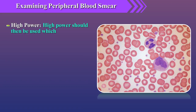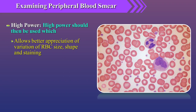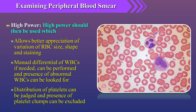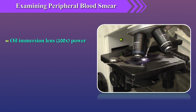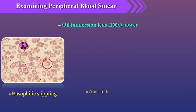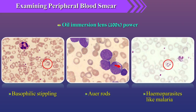Having selected the subtail region of the film where RBCs are just overlapping, high power should then be used, which allows better appreciation of variation in RBC size, shape, and staining. A manual differential of WBCs if needed can be performed, and presence of abnormal WBCs can be looked for. Distribution of platelets can be judged and presence of platelet clumps excluded. The oil immersion lens or 100x power should be used only for final examination of unusual cells and fine details such as basophilic stippling, Auer rods, or hemoparasites like malaria.